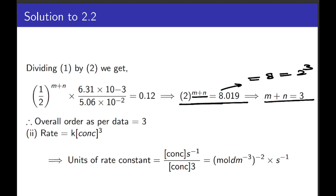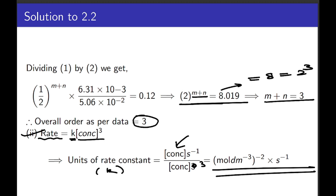Now for the units of the rate constant: since the overall rate order is 3, we write rate = K·[concentration]³. The units of K equal units of rate divided by concentration cubed, which gives concentration⁻² time⁻¹ (or mol⁻² L² s⁻¹). We are now done with the second part and can proceed to the third part.